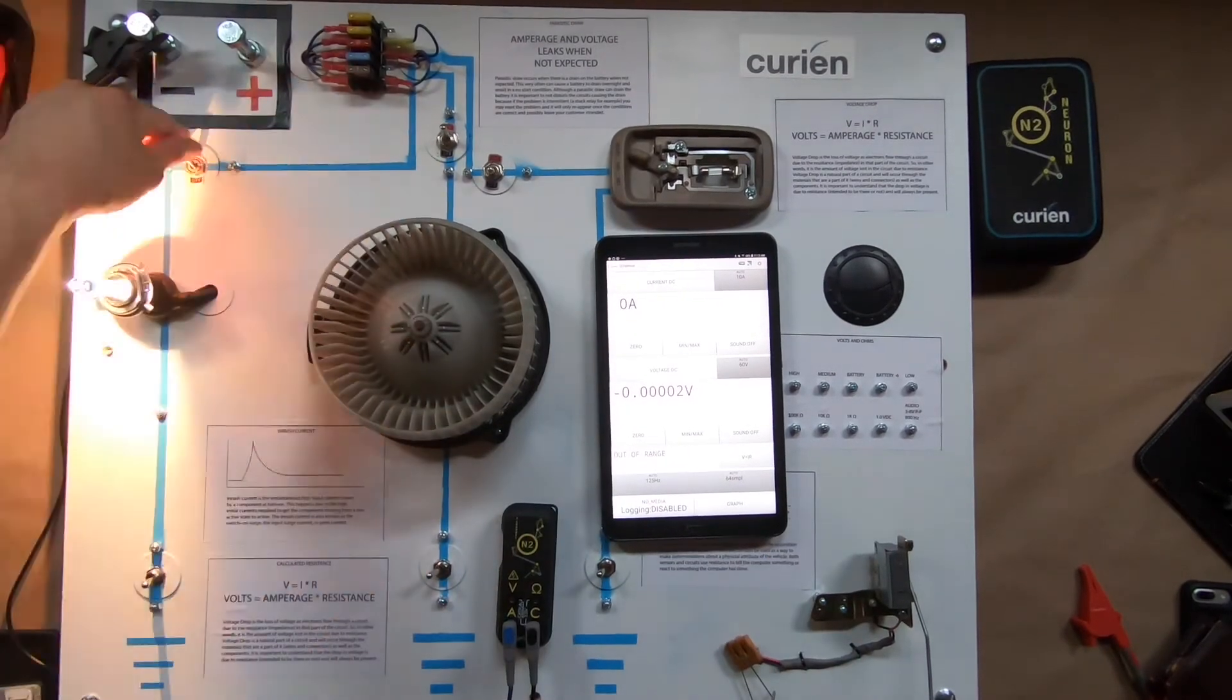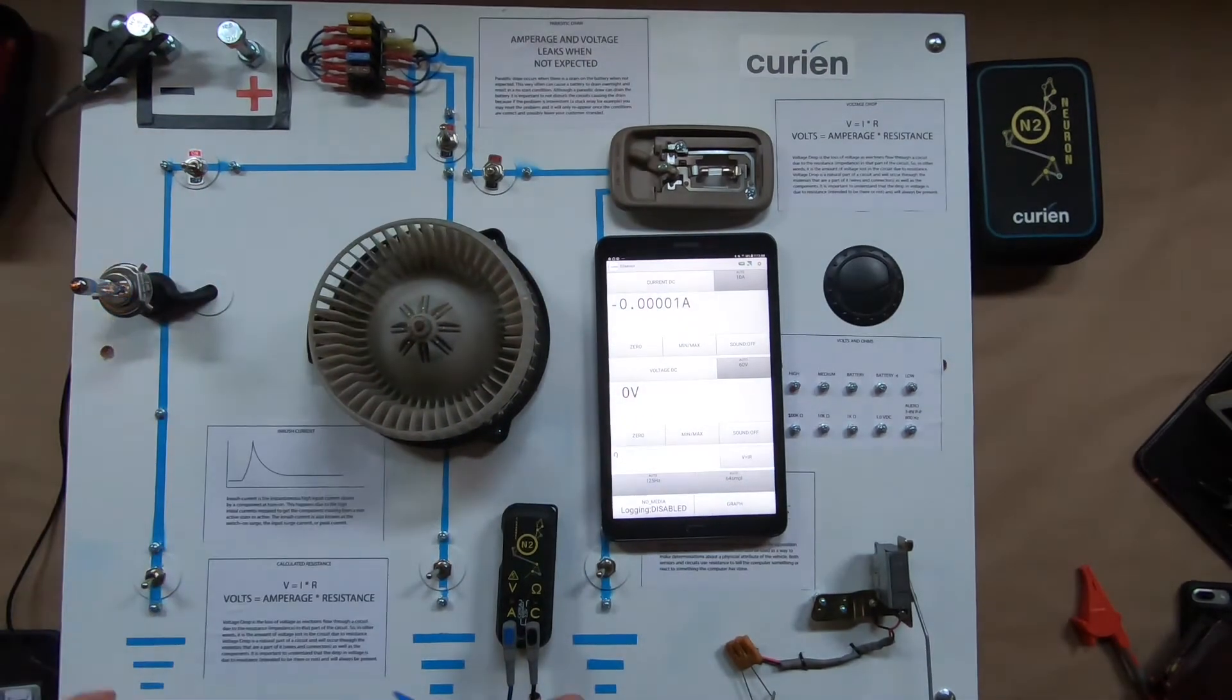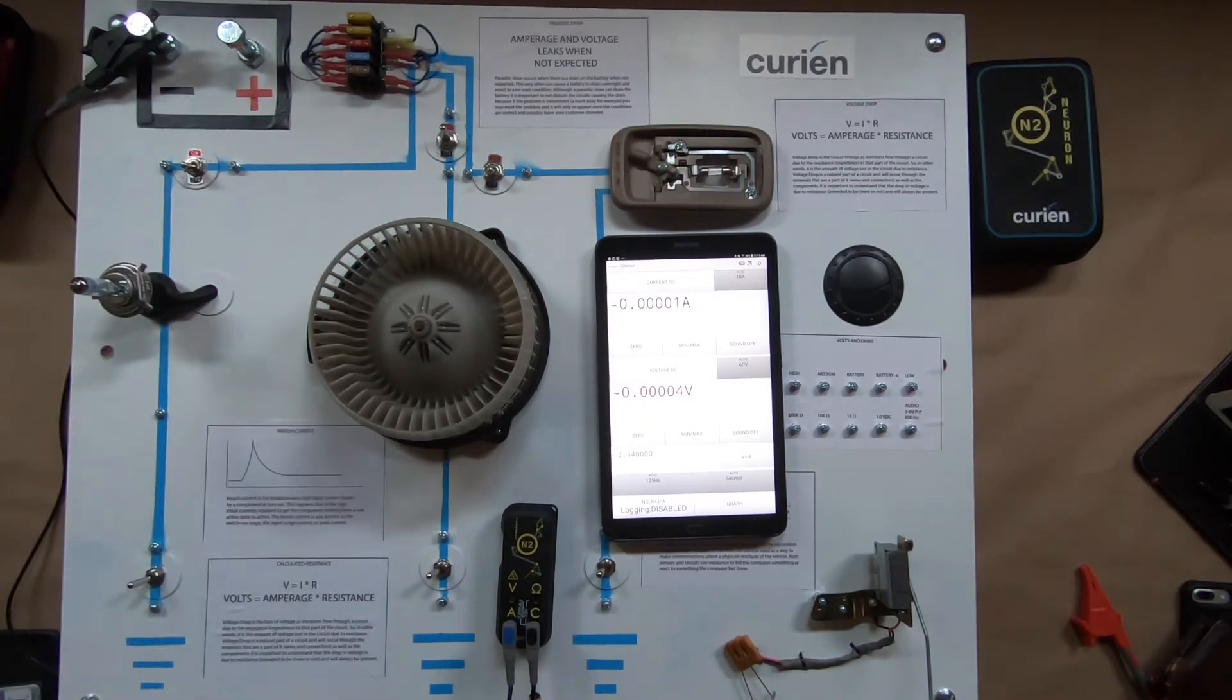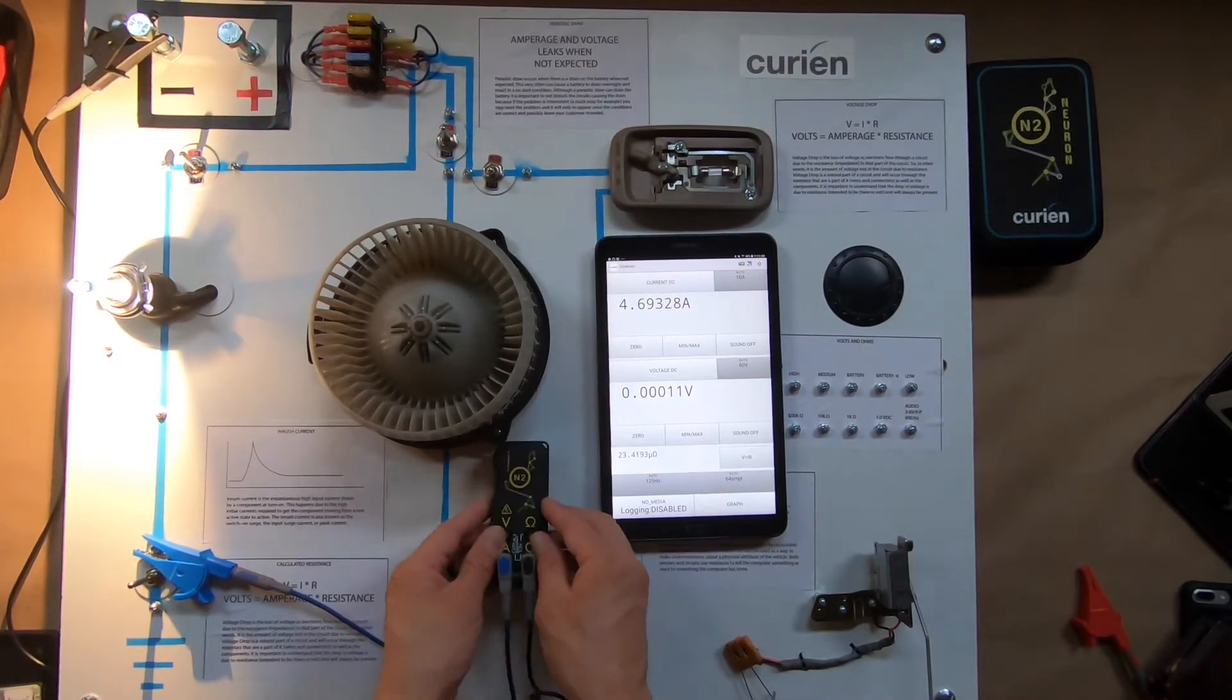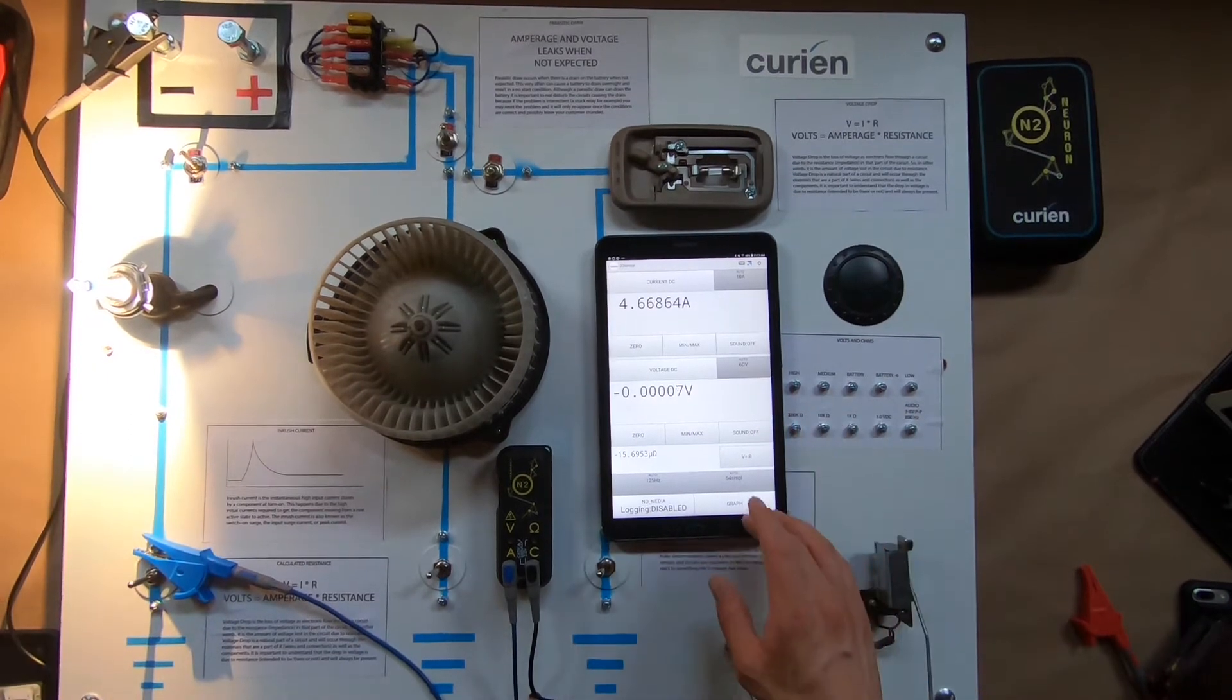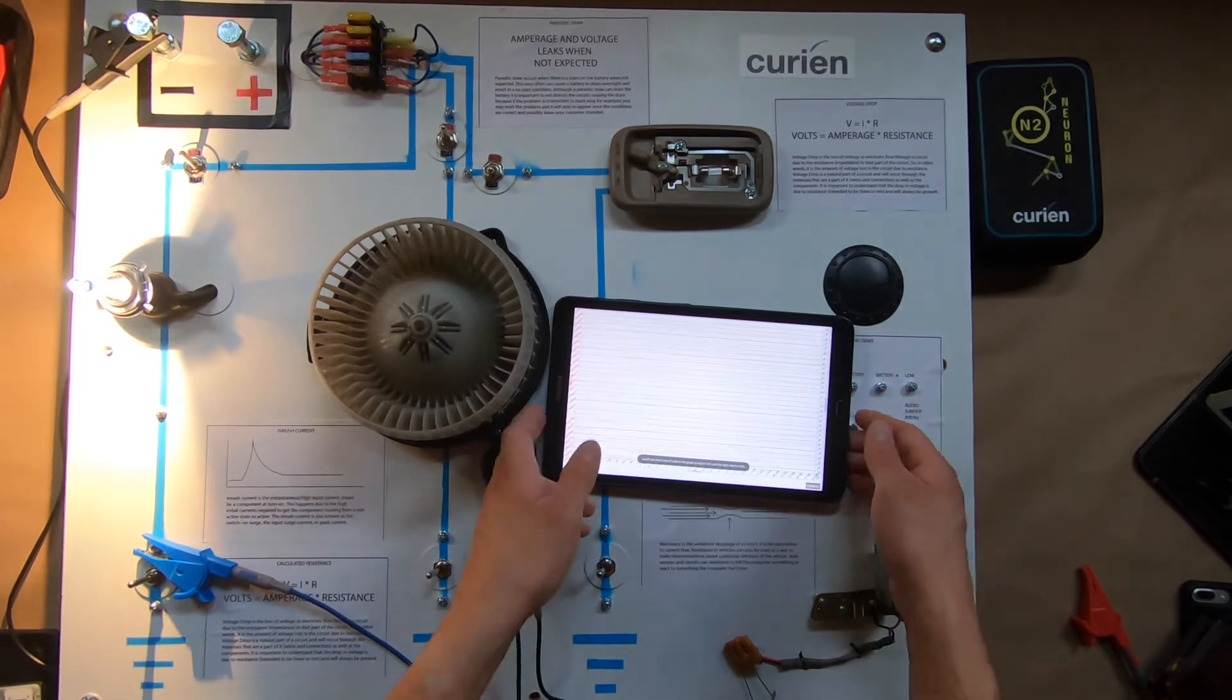And just to show you, we're going to turn it on. She turns on, nothing crazy. But as we open the circuit and now that we're connected to ground, we can actually connect that circuit through the N2, and we get our amperage reading: 4.6 amps. And if we wanted to, of course, we could graph all of this.